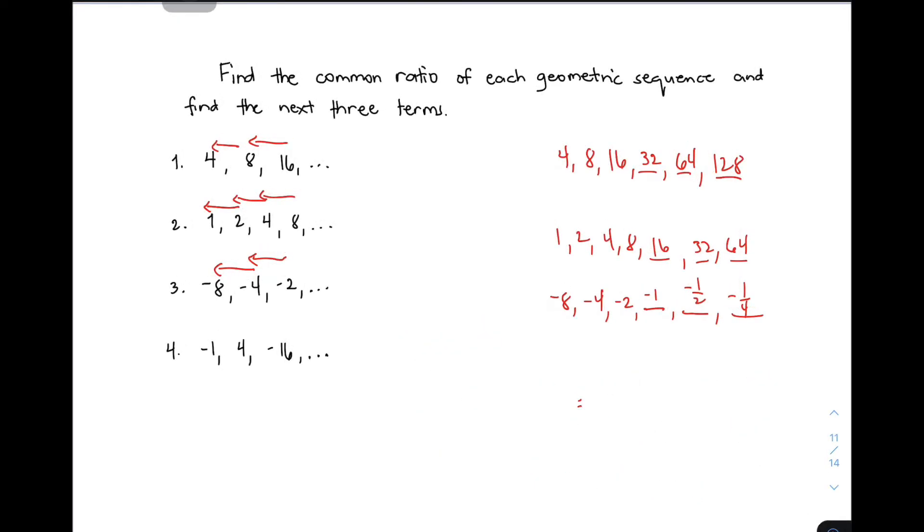For item number 4, you have -1, 4, -16. As you can see, the signs alternate. So expect the fourth term to be negative, the fifth positive, and the sixth negative. First, find the common ratio. r = 4 ÷ -1 = -4. Verify: -16 ÷ 4 = -4. The common ratio is -4. The sequence is -1, 4, -16...